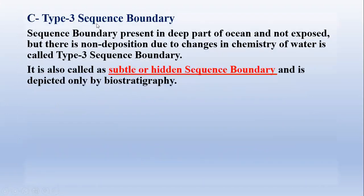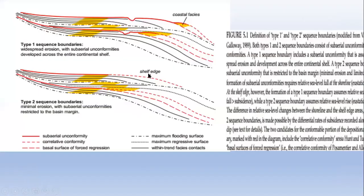Type 3 sequence boundary is an uncommon type present in the deep part of the ocean and is not exposed. There is non-deposition due to changes in the chemistry of the water. It is also called a subtle or hidden sequence boundary and is depicted only by biostratigraphic data.